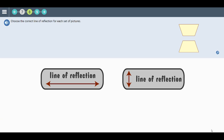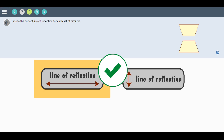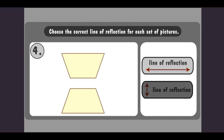Click on the correct line of the reflection for each set of pictures. Let's check the answer. The line of reflection goes straight across. Got it? Click the button to move on.